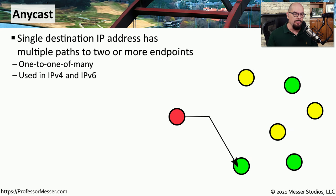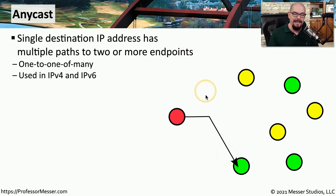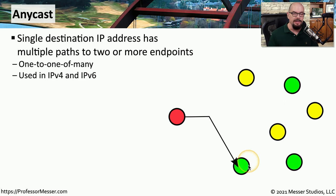There's another way to communicate, where you have a source device that needs to communicate to a different type of device. There are many options available on the network, but ultimately you only need to talk to one of those. This is Anycast, which allows you to communicate to a single device on the network, but that single device could be one of many options available.